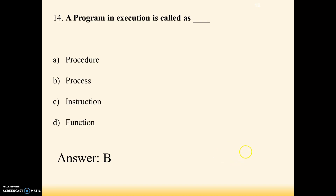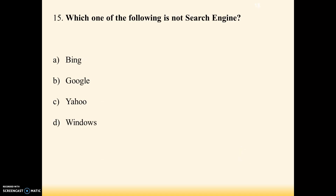Next question: a program in execution is called as — options are procedure, process, instruction, function. Answer is B — a program in execution is called as process. A program which is in the execution stage is called processing — executing to get the exact result or output.